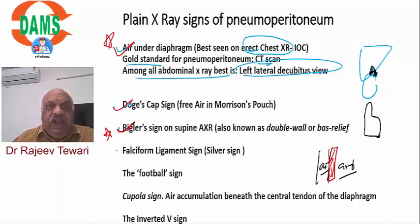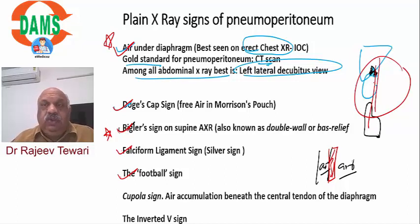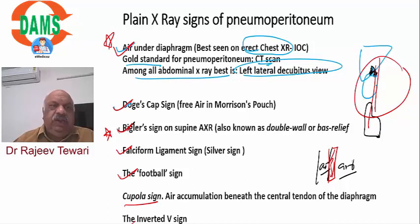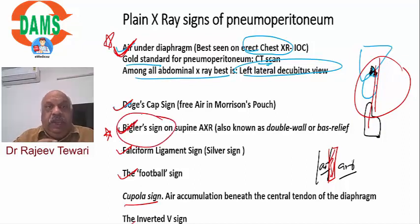Other pneumoperitoneum signs include: the falciform ligament sign, where the falciform ligament becomes visible; football sign, where the pneumoperitoneum air in the abdomen gives a football-like appearance with a suture-like line from the falciform ligament; and cupola sign and inverted V sign. Remember: Rigler's sign is also seen in gallstone ileus. The Doge cap and Rigler's signs are the most important.